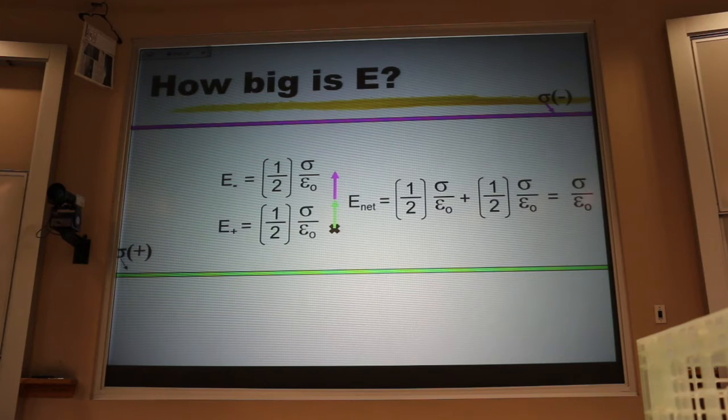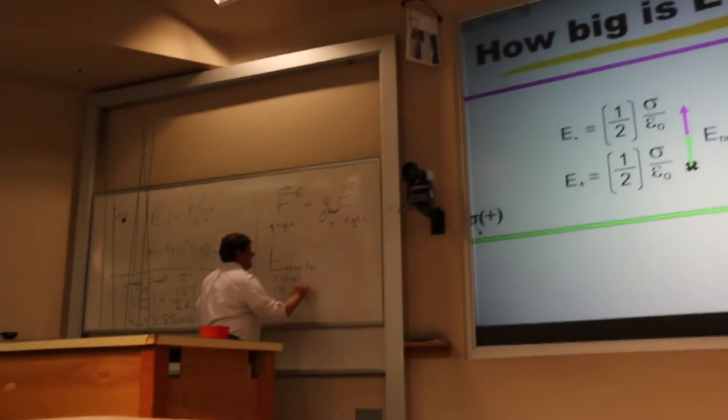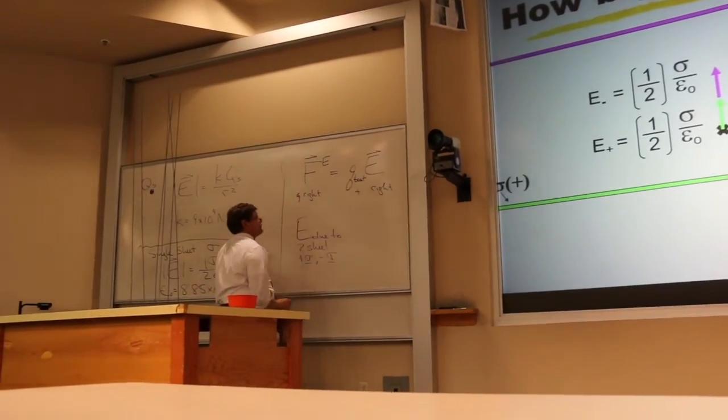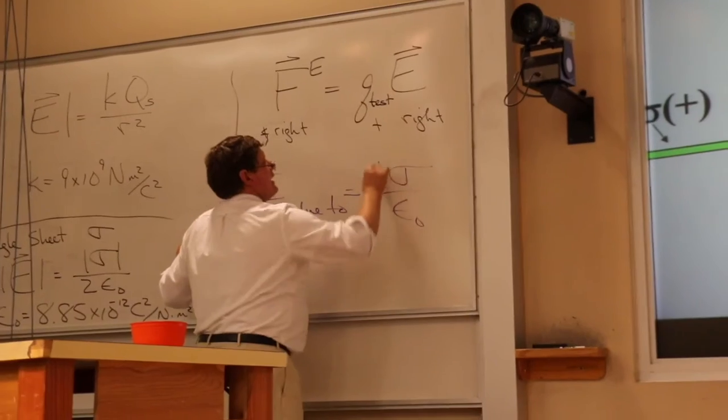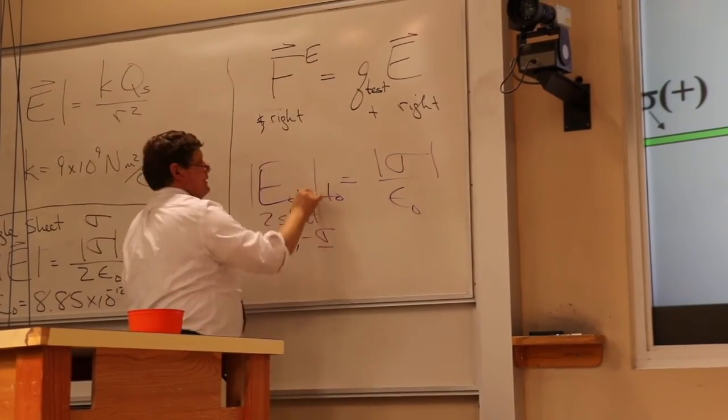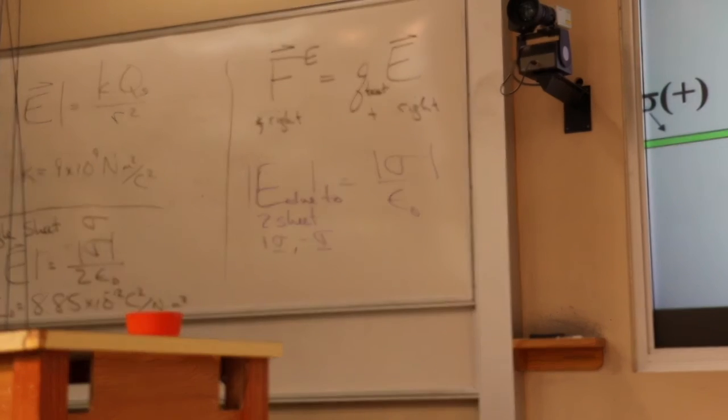But it's not just any two sheets. It's got to be a plus sigma and a minus sigma, where these are the same size. And that's going to be sigma over epsilon naught. And I only use the formula to find the strength. The field is away from a positive towards a negative.